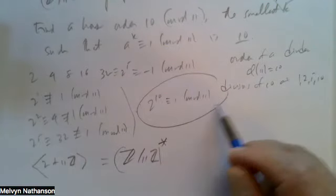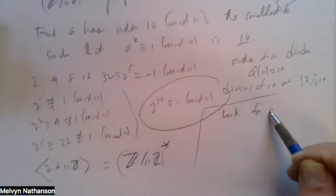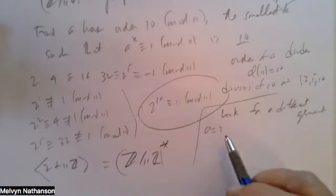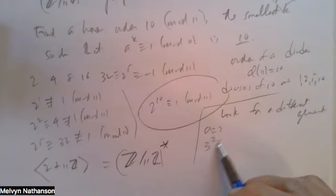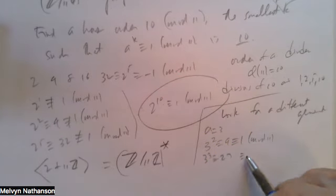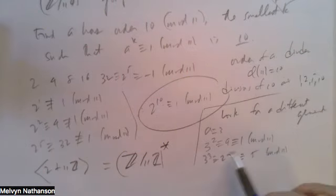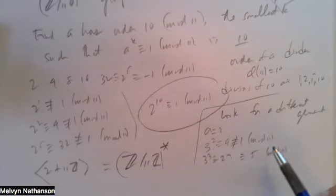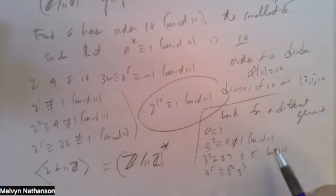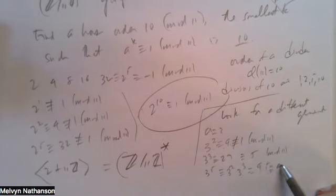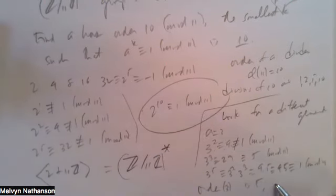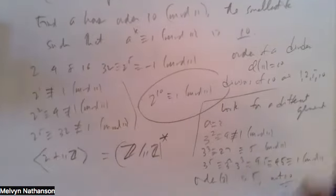We could look for another generator. Suppose we try a=3. Then 3²=9, not congruent to 1 mod 11. 3³=27≡5 mod 11. For 3⁵: that's 3²·3³≡9·5=45≡1 mod 11. So the order of 3 mod 11 is 5, not 10. Therefore 3 is not a generator of the cyclic group. We could try other congruence classes to see if there are more generators.